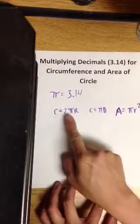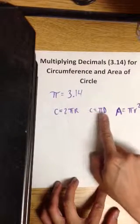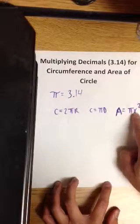So, we have circumference is the same as 2 times pi times radius. Circumference is the same as pi times diameter. Area of a circle is pi times radius squared.